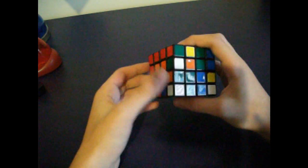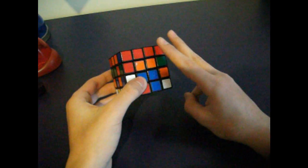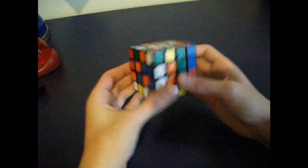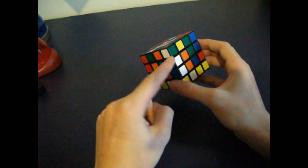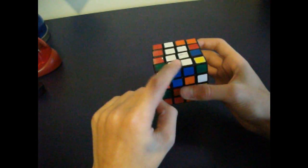Now that we have two opposite centers, we can do the next step, which is to solve three edge pairs. What I mean by that is a blue and white edge right here. I'm going to put it on the top layer, just like that. You want to do two more of those.